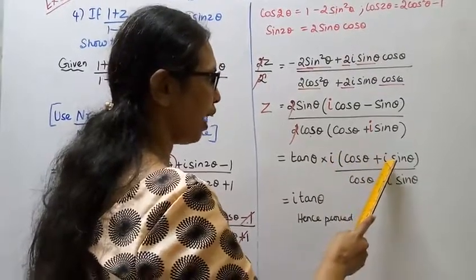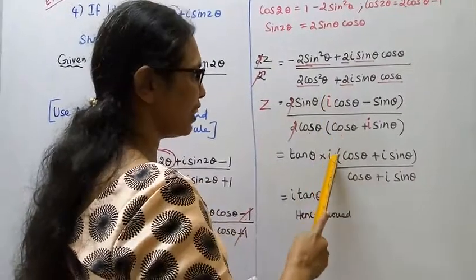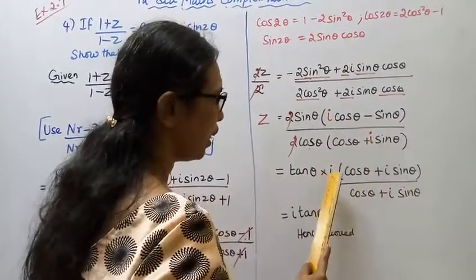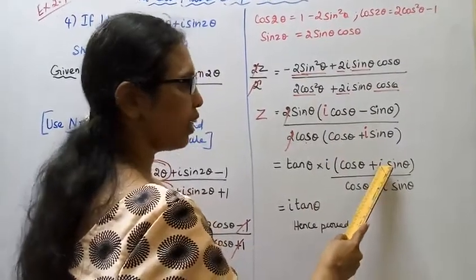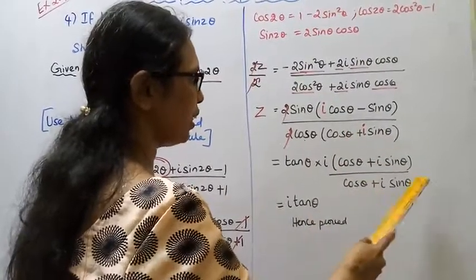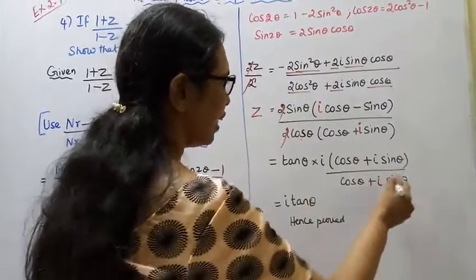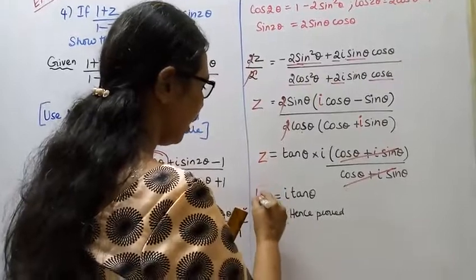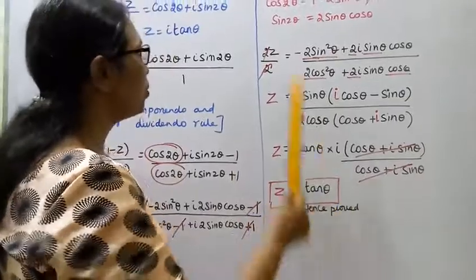Using i² = −1, we get sinθ divided by cosθ multiplied by i, with (cosθ + i·sinθ) cancelling out. Therefore z equals i·tan θ — proved.